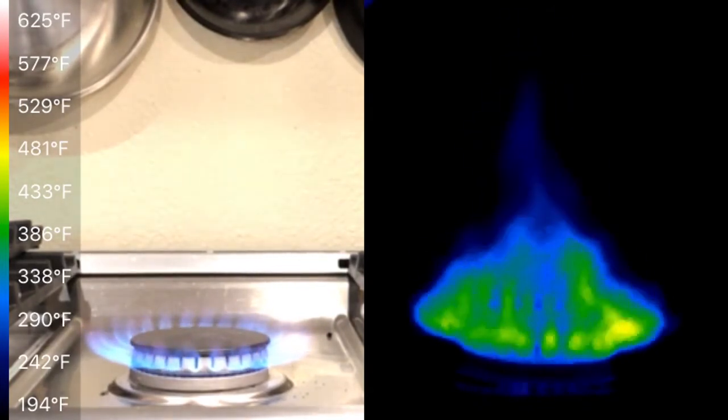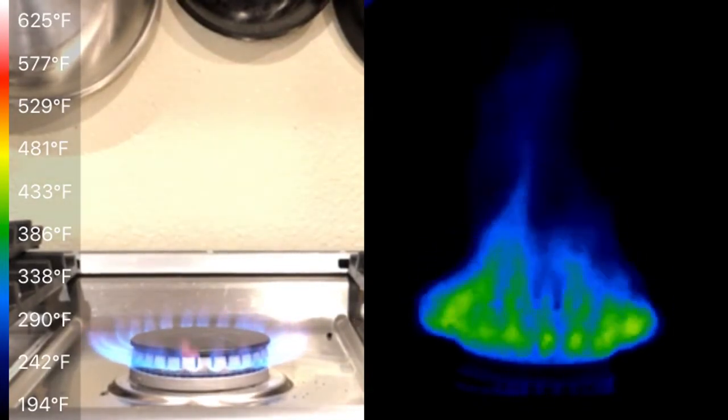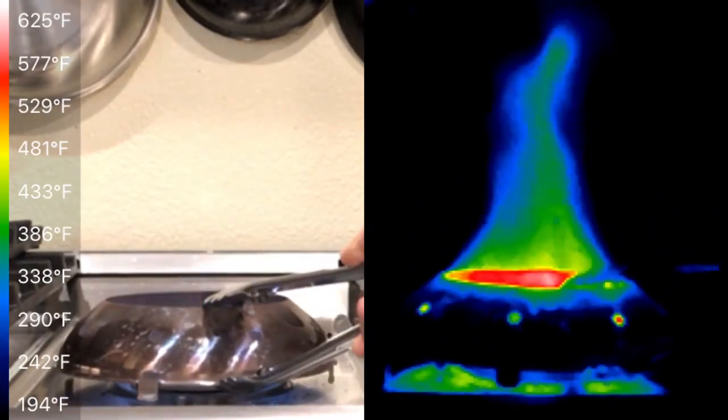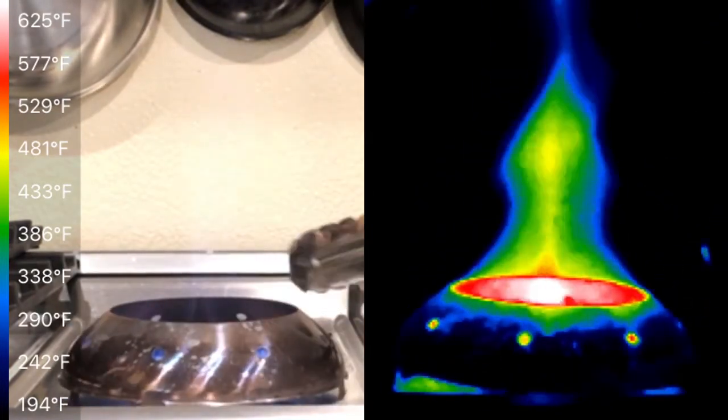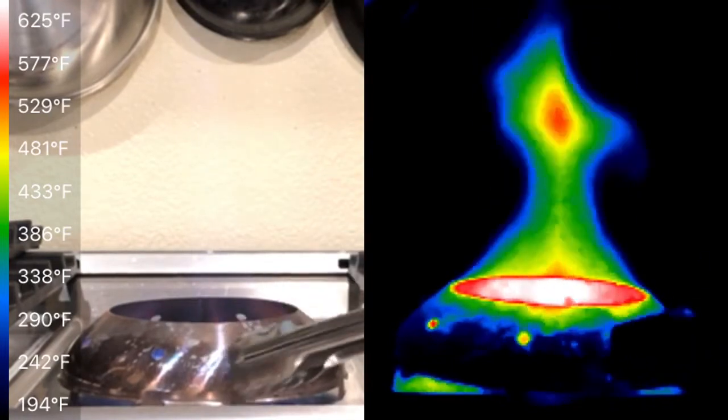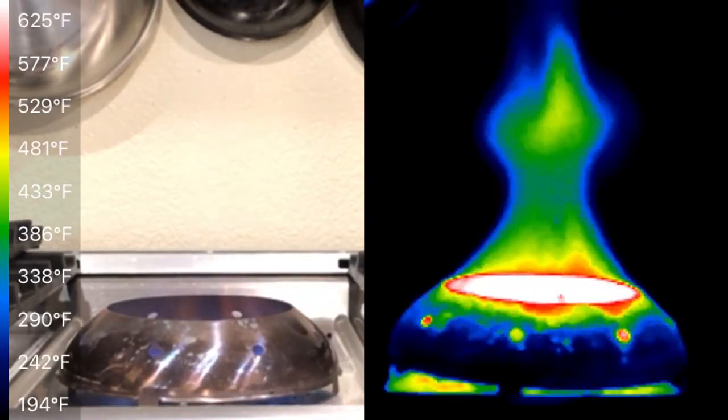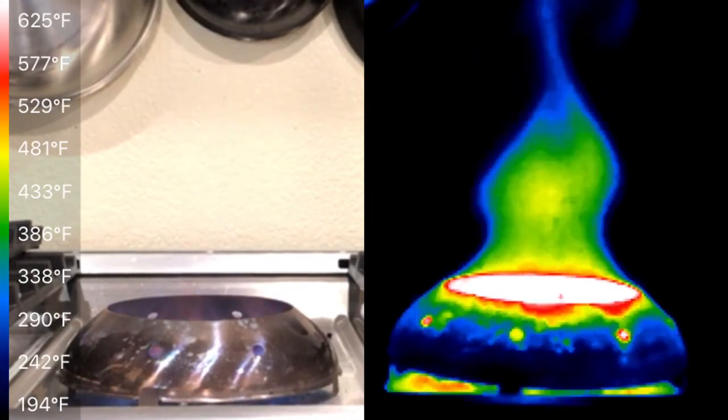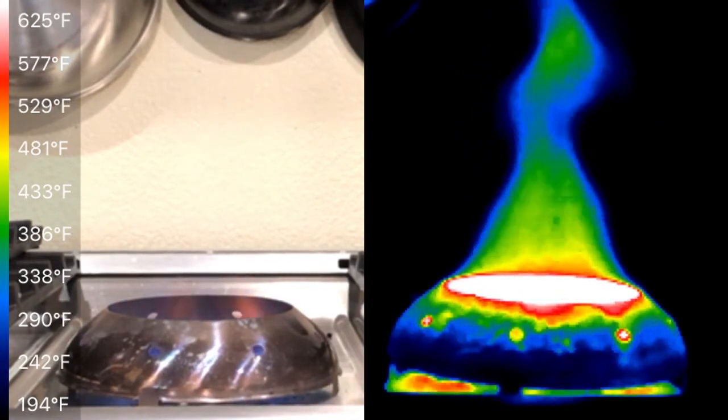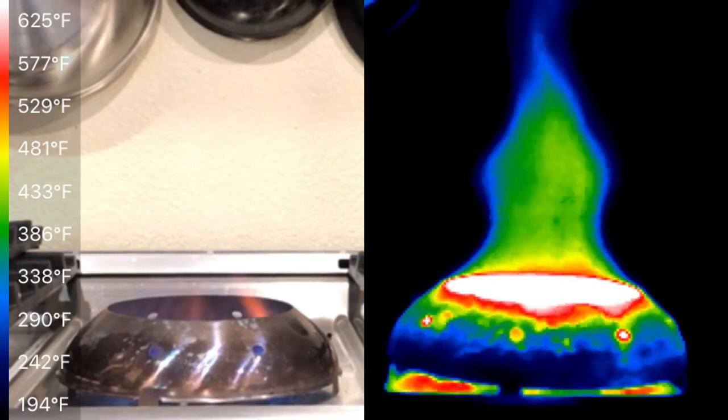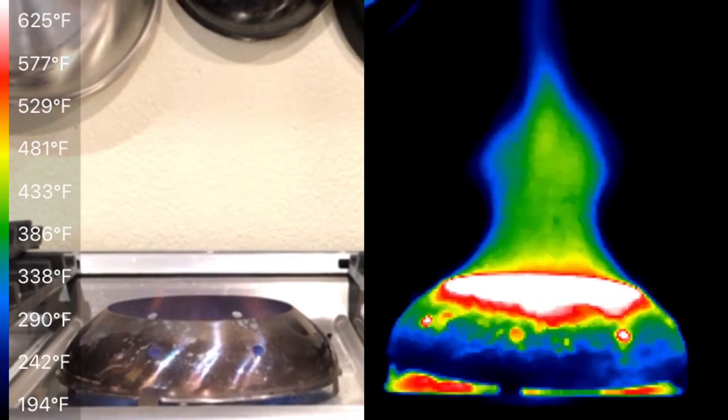And then let's put the Wokmon on. What you can see with the Wokmon is that the area of concentrated heat, even though you can't see blue flames jetting up on the normal visual, you can see that the hot gas area is particularly intense. It's pretty hot.